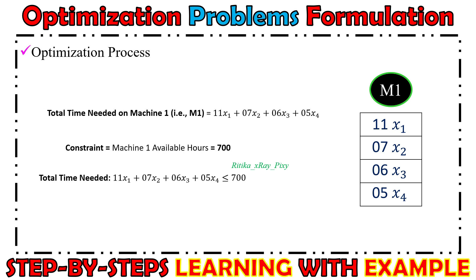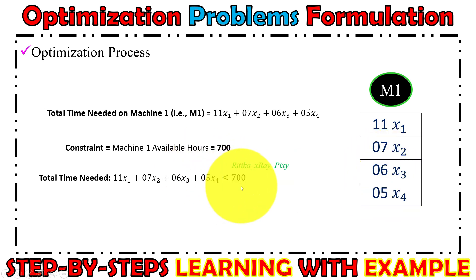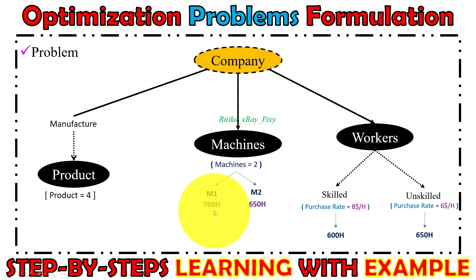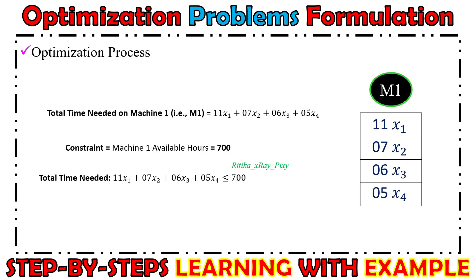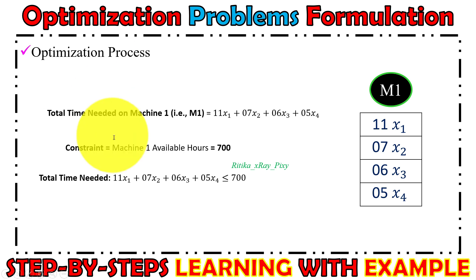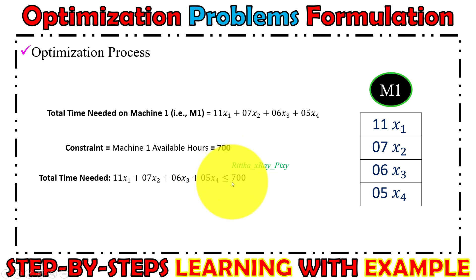This gives us the first constraint. Machine one has a time limit: it is available for 700 hours each month. So the total machine time cannot exceed 700 hours — the value obtained must be less than or equal to 700. This is the first constraint: 11x1 + 7x2 + 6x3 + 5x4 ≤ 700.